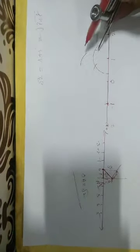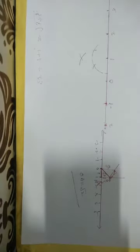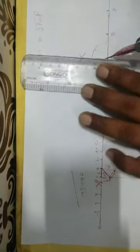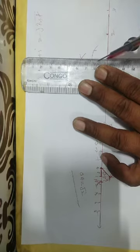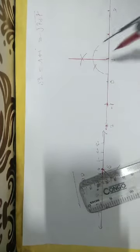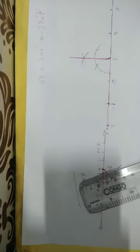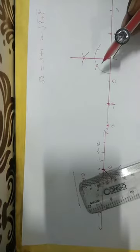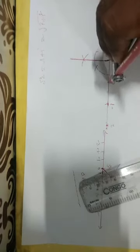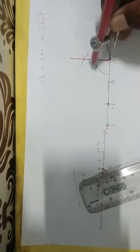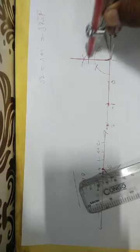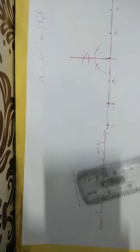At 1, make a 90 degree angle using protector or compass. Once the angle is ready, take the length of one unit with compass and cut an arc from this point.